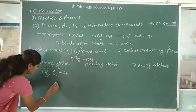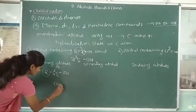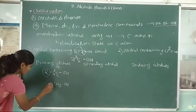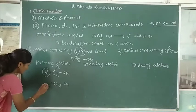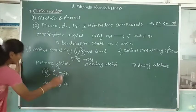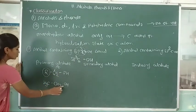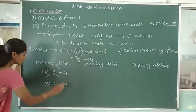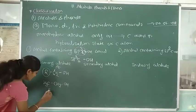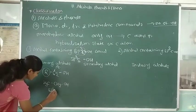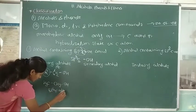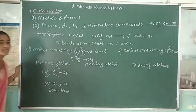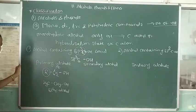For example, CH3–CH2OH is called ethyl alcohol. This OH group is attached to a primary carbon atom, so it is called a primary alcohol.